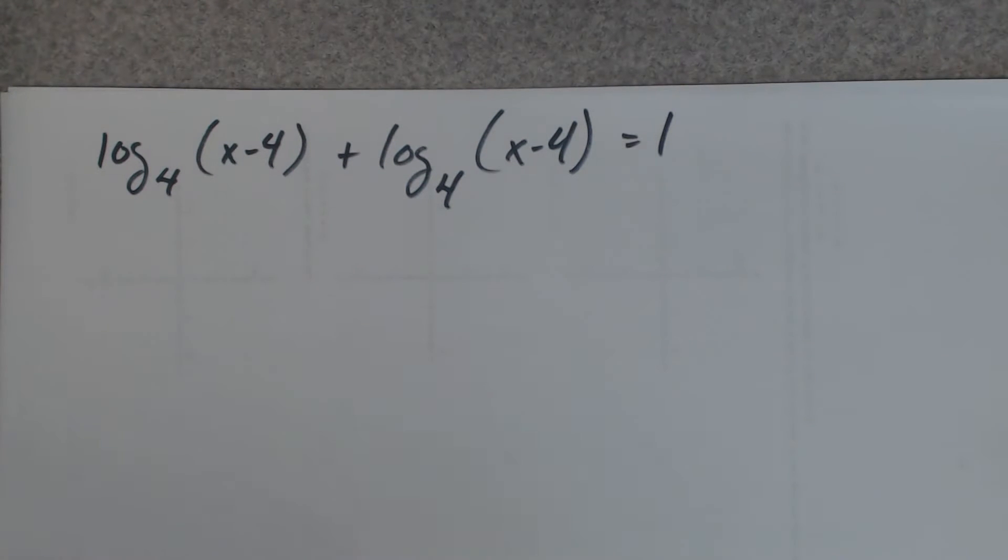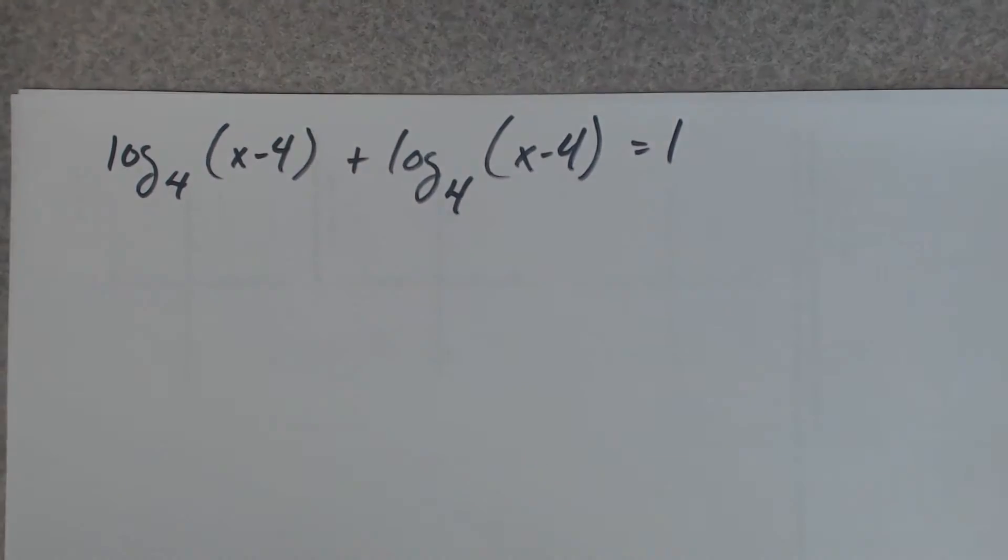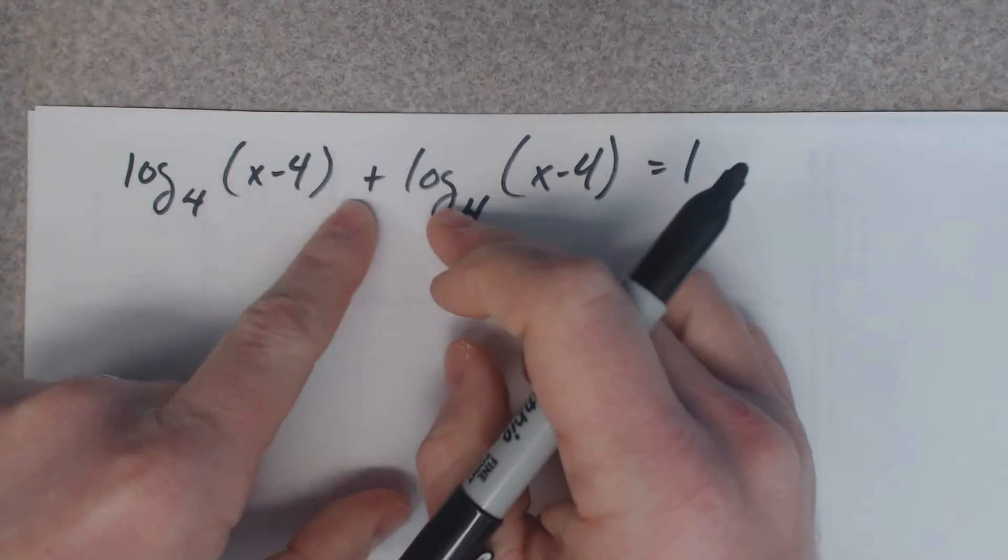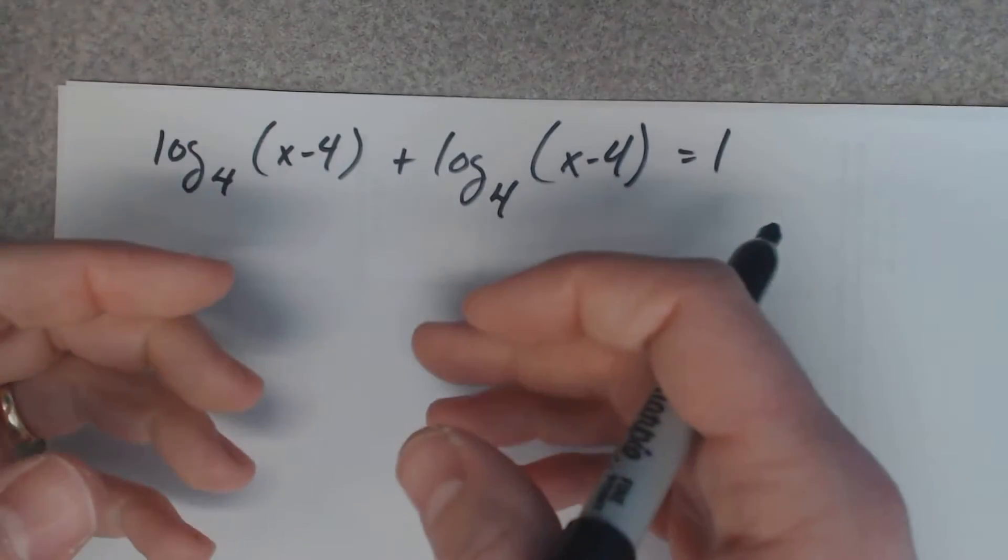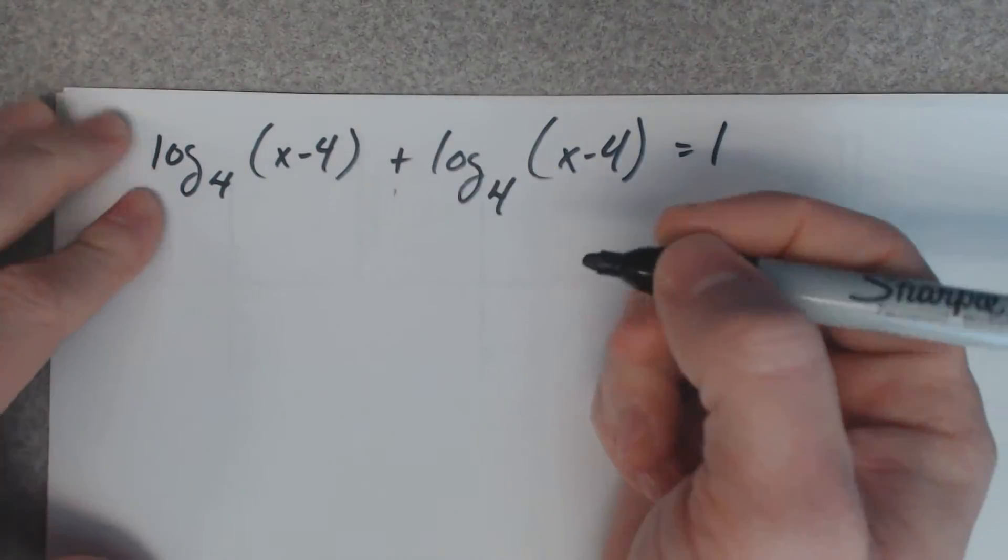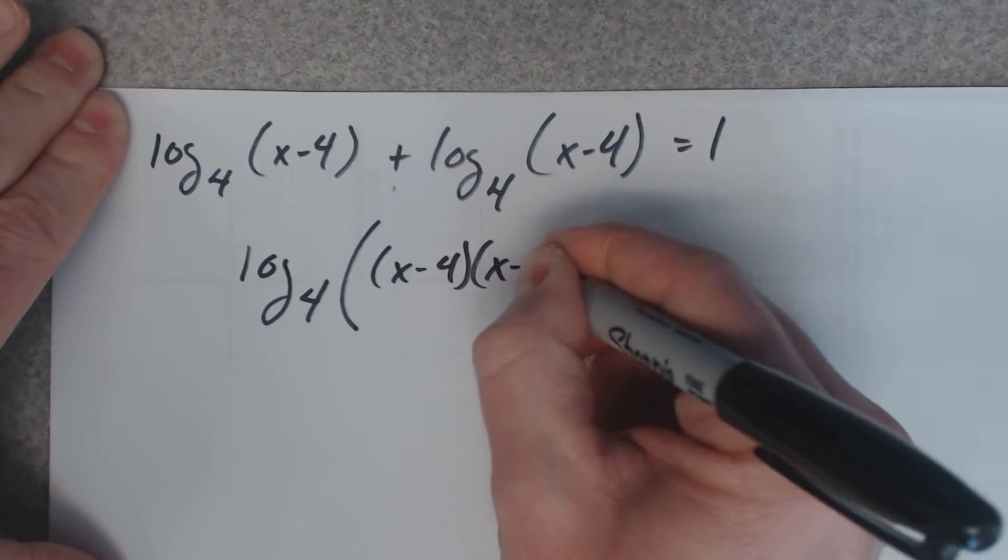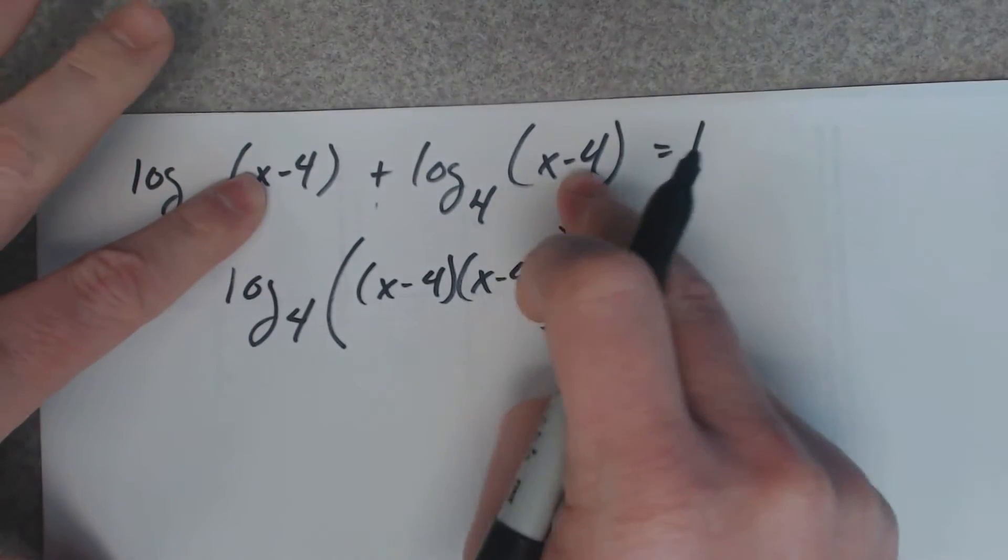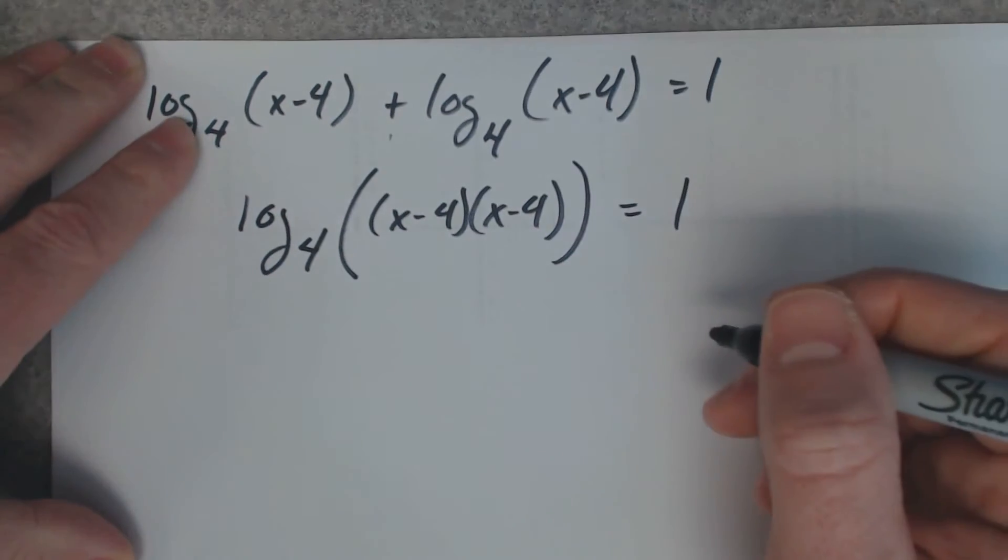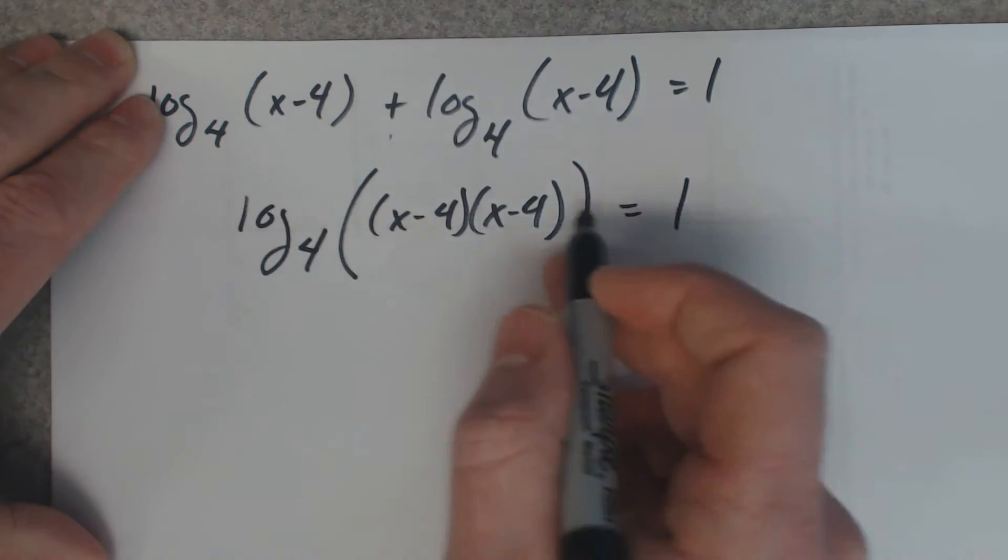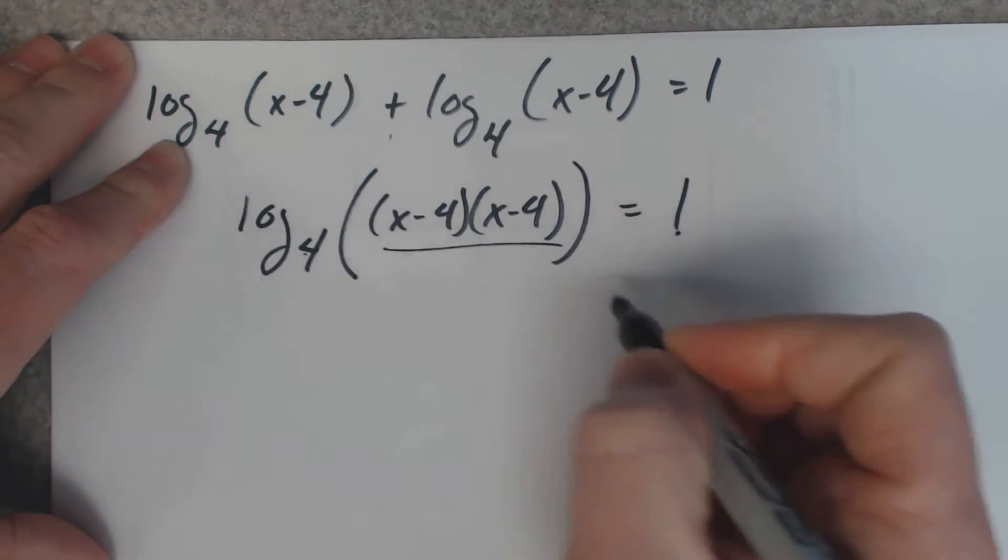We've got an equation with logarithms in it that we want to solve it. This jumps out at me saying that I can put this back together. Whenever you're trying to solve a logarithm question the very first thing you want to try to do is get it all back together to one log. So, if I can put this back together with multiplication, it's a good idea. Log base four of x minus four times x minus four. Put those two pieces back together with multiplication. Equals one. Now once I have one logarithm, I can rewrite it as an exponential. I can get rid of the logarithm just by rewriting it. Four to this power equals what's inside here.